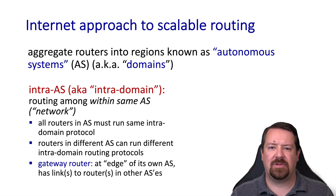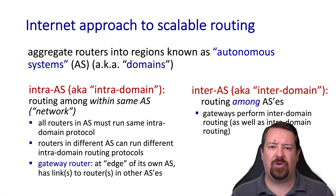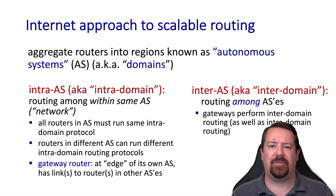These domains or ASs are able to talk to each other at the border by using gateway routers. Inter-domain routing or inter-AS routing controls what happens between domains or ASs. The gateways use a different routing protocol to communicate amongst each other, and we'll learn more about that in following videos.